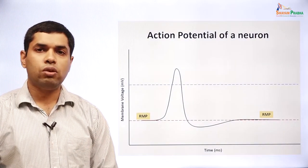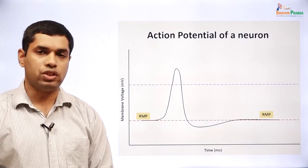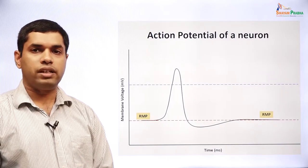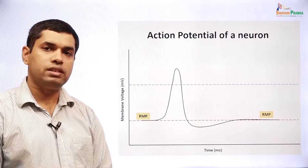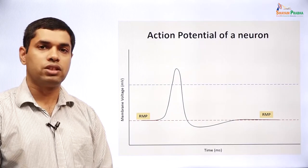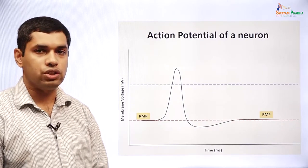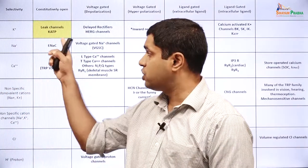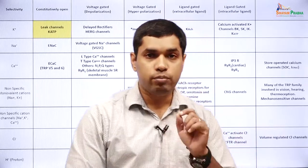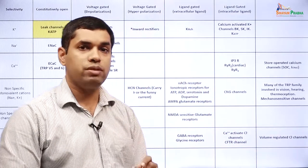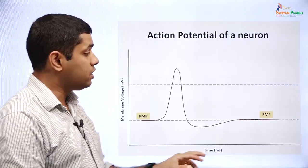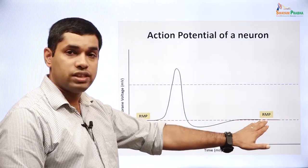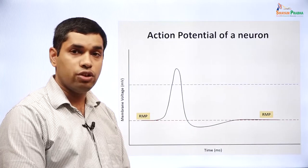Now let us look at the neuronal action potential and the ion channels that contribute to it. We have seen the leak potassium channel, which contributes to potassium permeability of the membrane, and this potassium permeability is important for maintaining the cell's resting membrane potential, especially in a neuron.